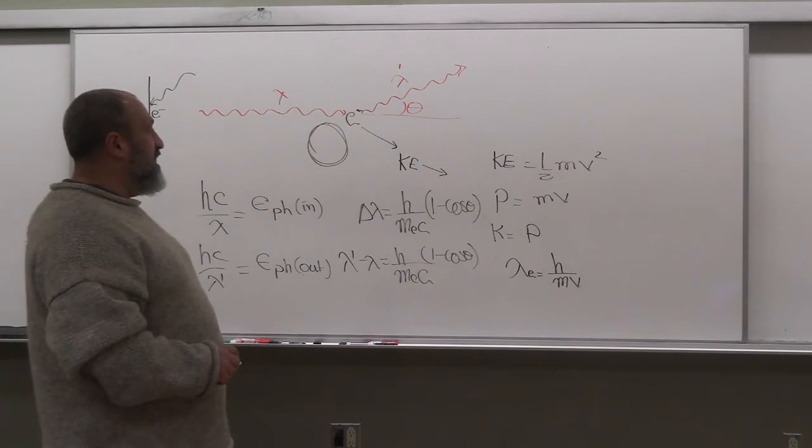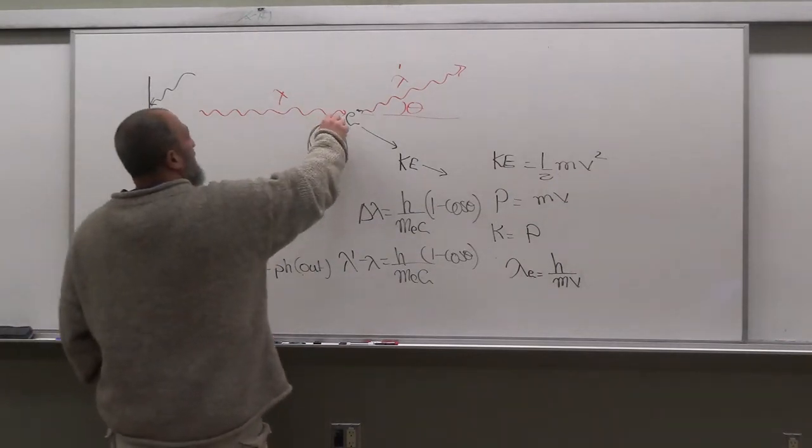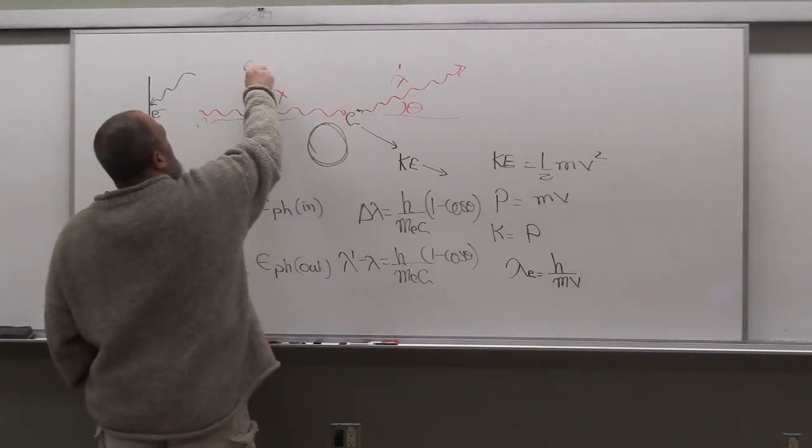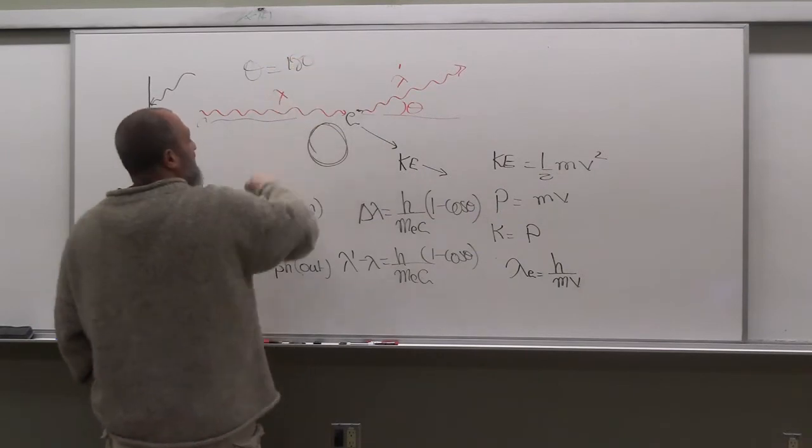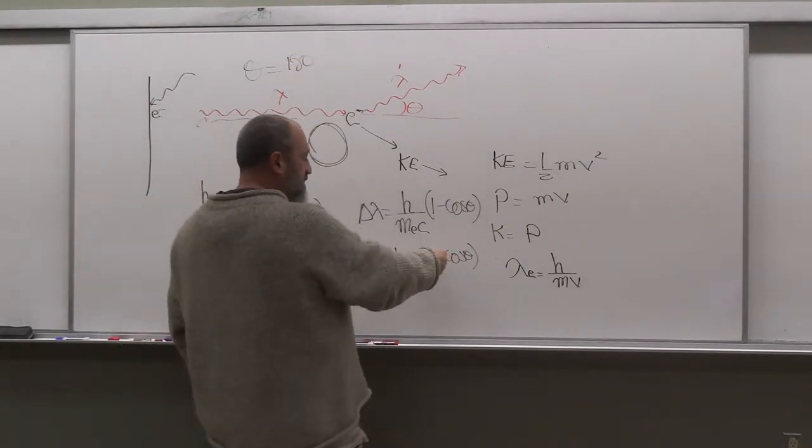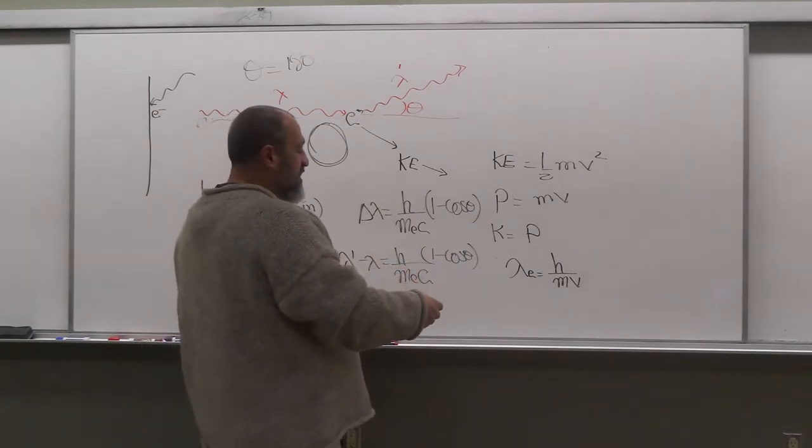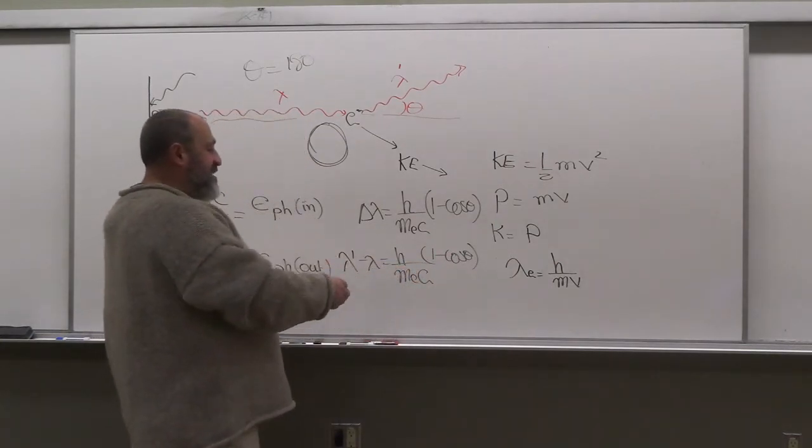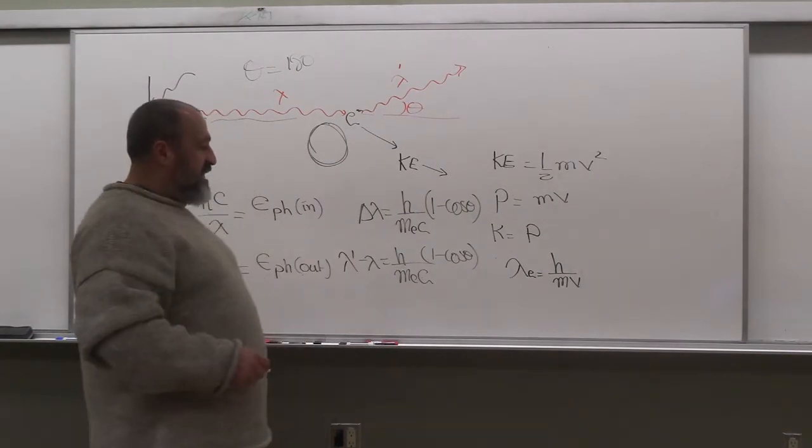And for backscattered photons, what does that mean? Photon comes in and goes back this way. Theta is 180. And when theta is 180, the cosine is minus one, then it becomes two. So for backscattered photons, lambda prime minus lambda is just two h over mₑc.